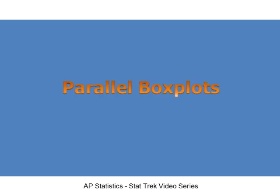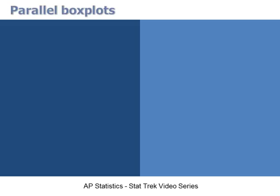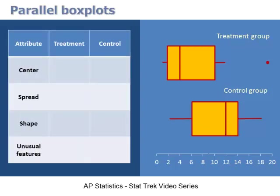Parallel box plots are another way to compare quantitative variables from two data sets. With parallel box plots, two data sets are displayed one above the other using the same horizontal axis. Here, parallel box plots summarize results from a medical study. The treatment group received an experimental drug to relieve cold symptoms, and the control group received a placebo. The horizontal axis shows the number of days each group continued to report symptoms. The treatment group has an unusual feature — an outlier representing a patient who continued to report symptoms 19 days after treatment began. The control group had no unusual features.